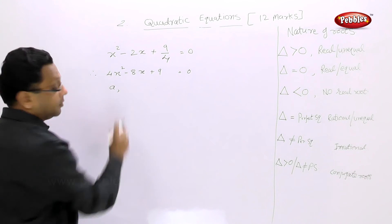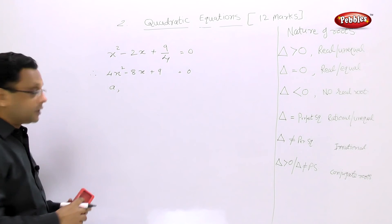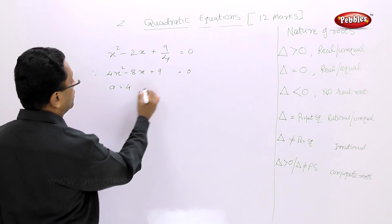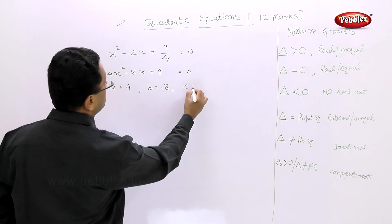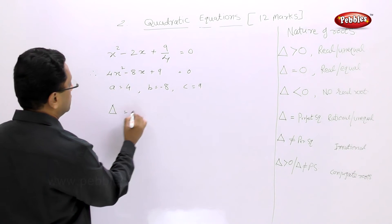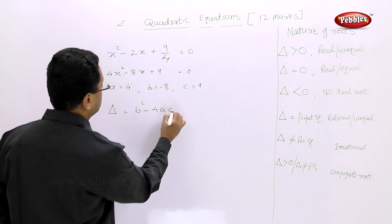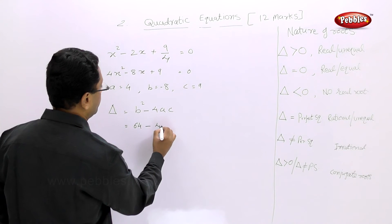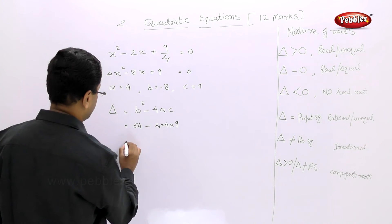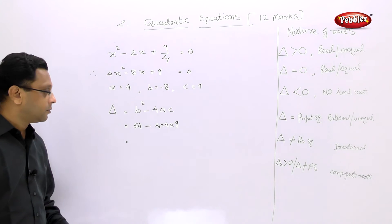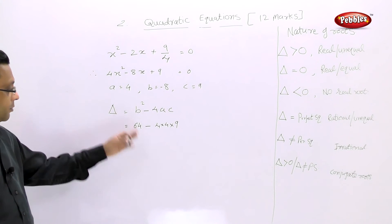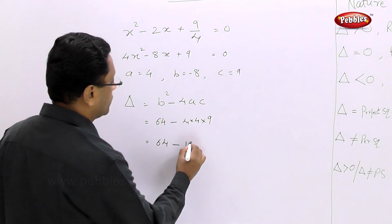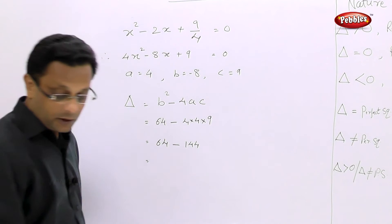Comparing with ax² + bx + c = 0, we get a = 4, b = -8, and c = 9. So the discriminant = b² - 4ac = 64 - 4×4×9 = 64 - 144 = -80.